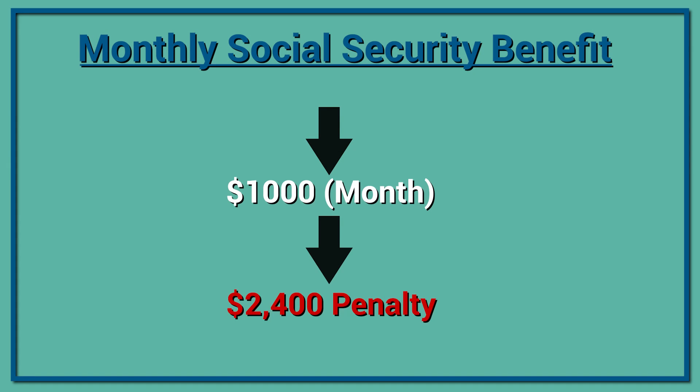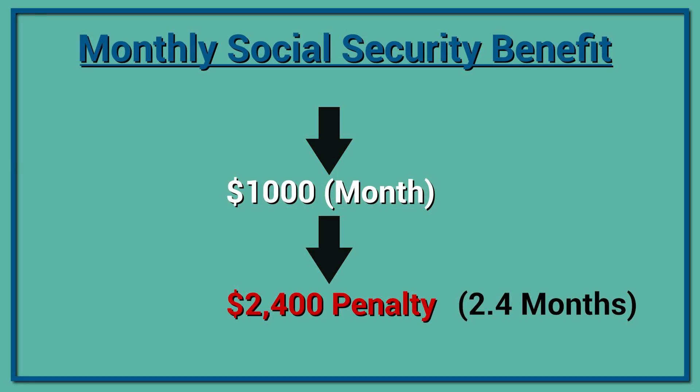But what if it's a fractional month? Say the penalty is $2,400 and you're getting $1,000 per month — that's 2.4 months worth of penalty. They don't take fractional months; it's all or nothing. So if you have a fractional month, they take the next full month's worth of benefit. If it's 2.4, they actually take three full months of your Social Security before turning it back on. So they took $3,000 to cover a $2,400 penalty — and they refund that $600 back to you as part of the refund process.